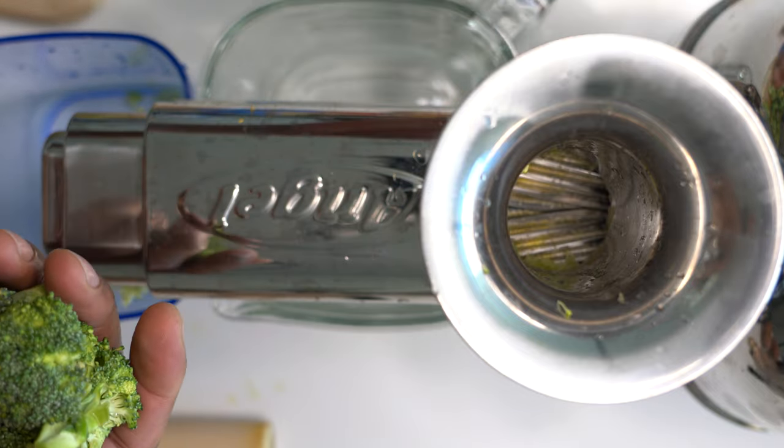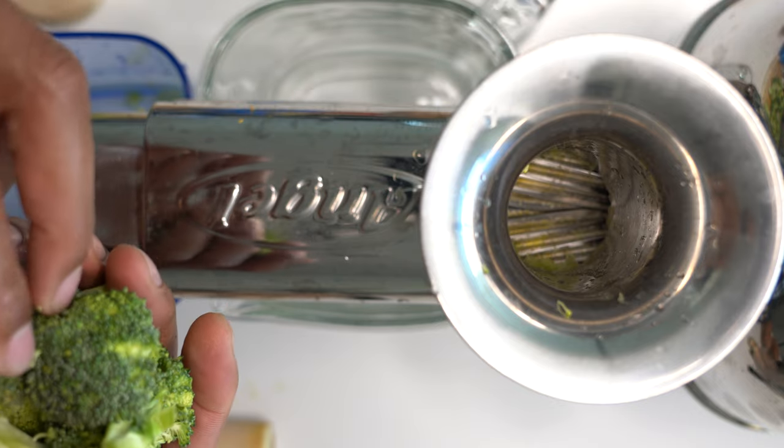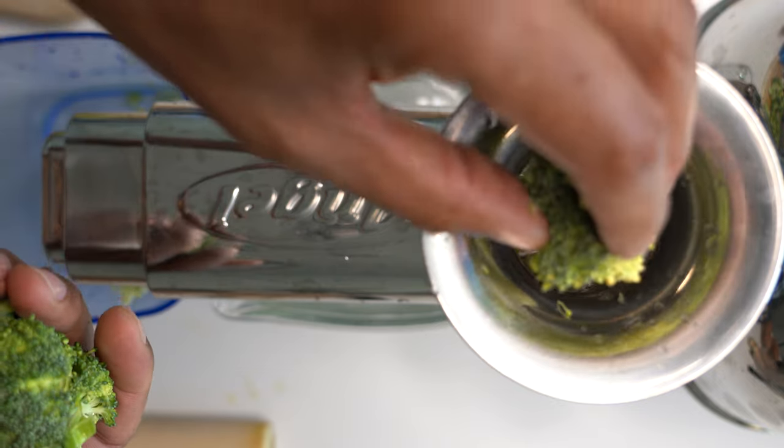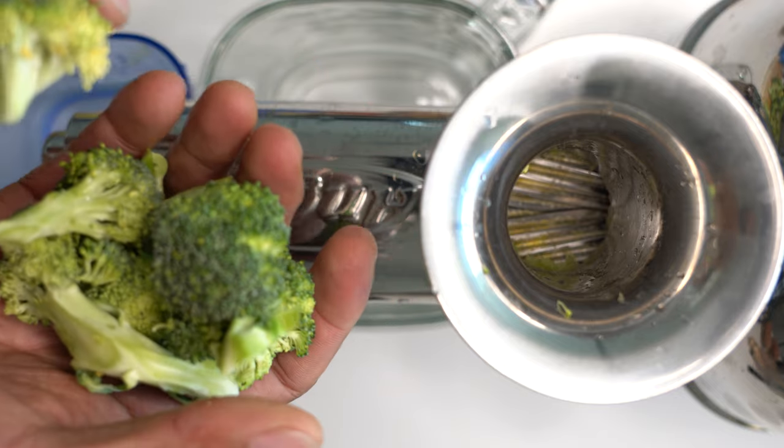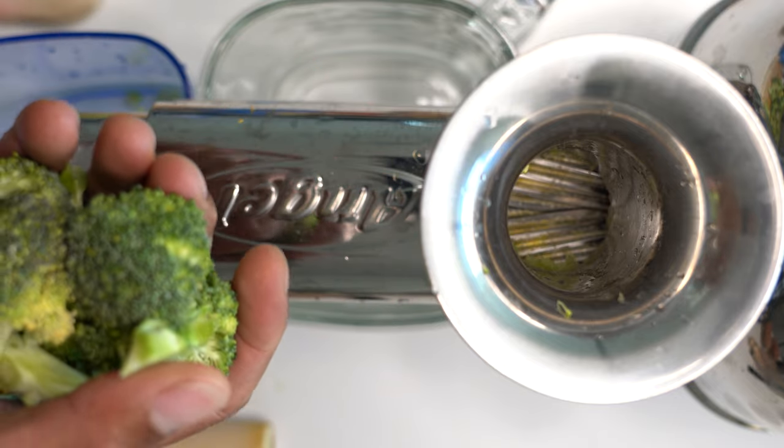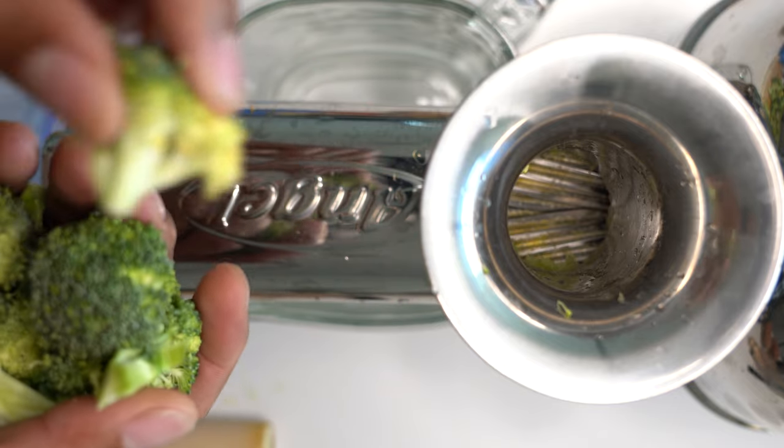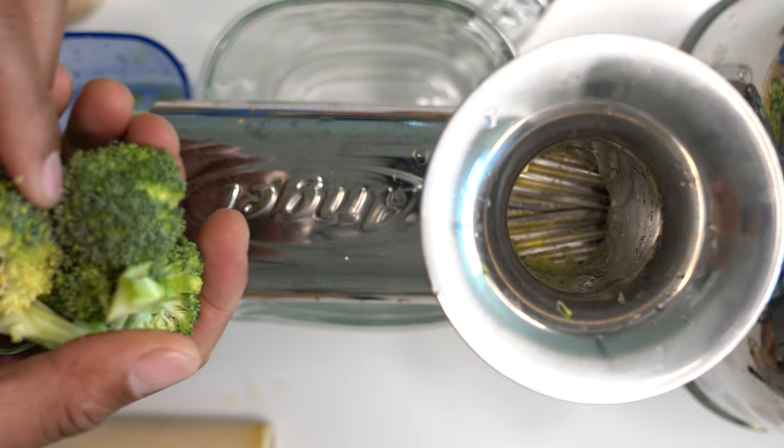I'm going to go ahead and turn the angel juicer on and then I'm going to proceed by placing the broccoli within the chute right here. Now it's important that when you put broccoli in the chute that the pieces are small enough to get through the chute without getting jammed.